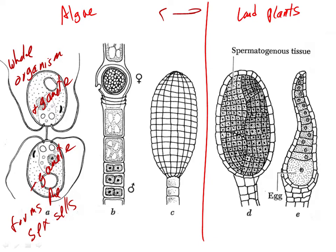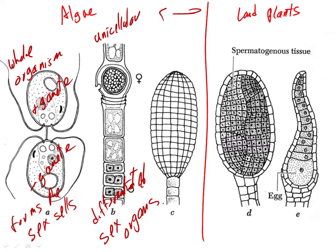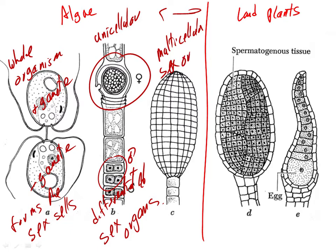In other cases, we have differentiated sex organs, but they're unicellular — unicellular differentiated sex organs. In this case, we have a non-mobile egg, and the sperm will be released here, the male and the female. And in the third case, we have multicellular sex organs. All of these cells here will form gametes.